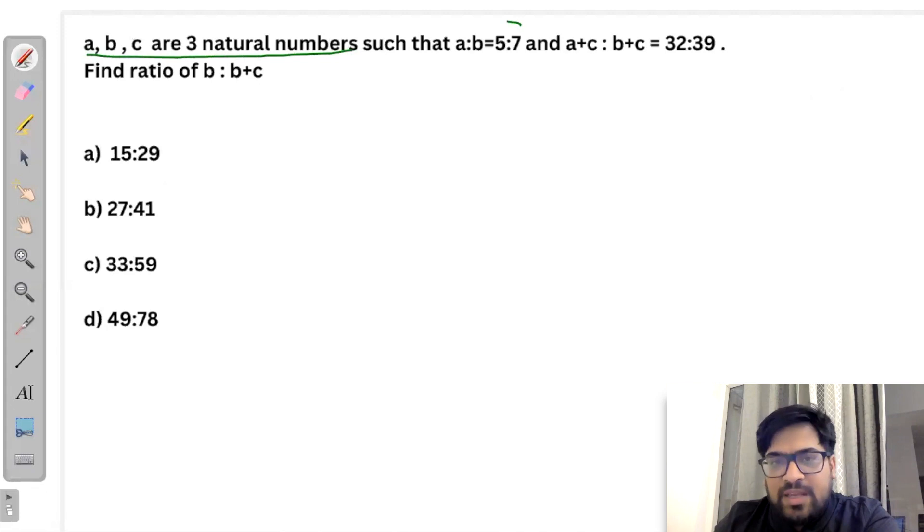So A, B, C are 3 natural numbers such that A is to B is 5 is to 7 and A plus C is to B plus C is 32 is to 39. Find the ratio of B is to B plus C.